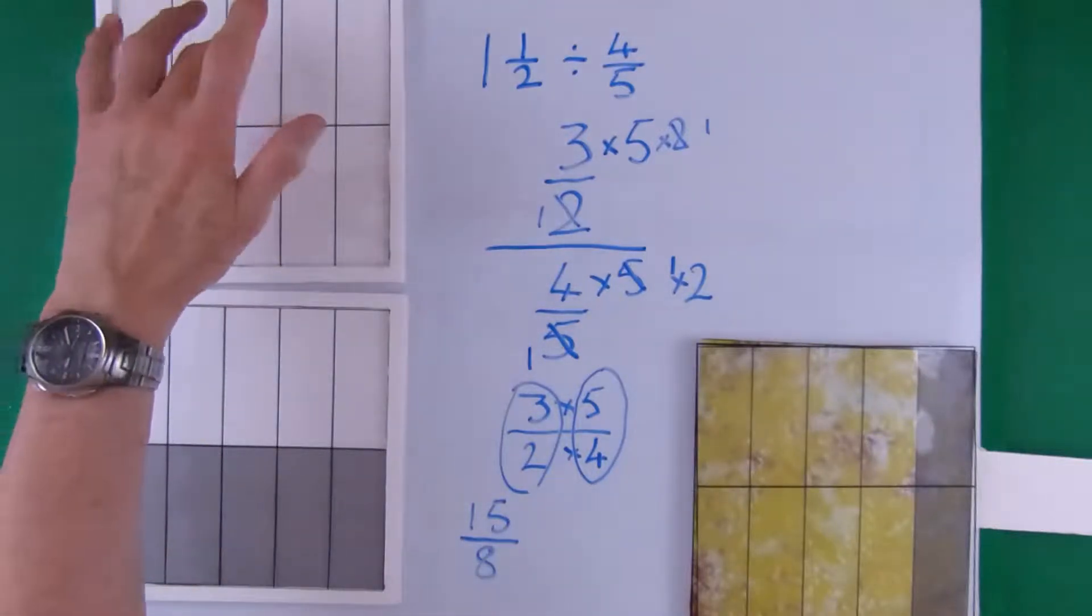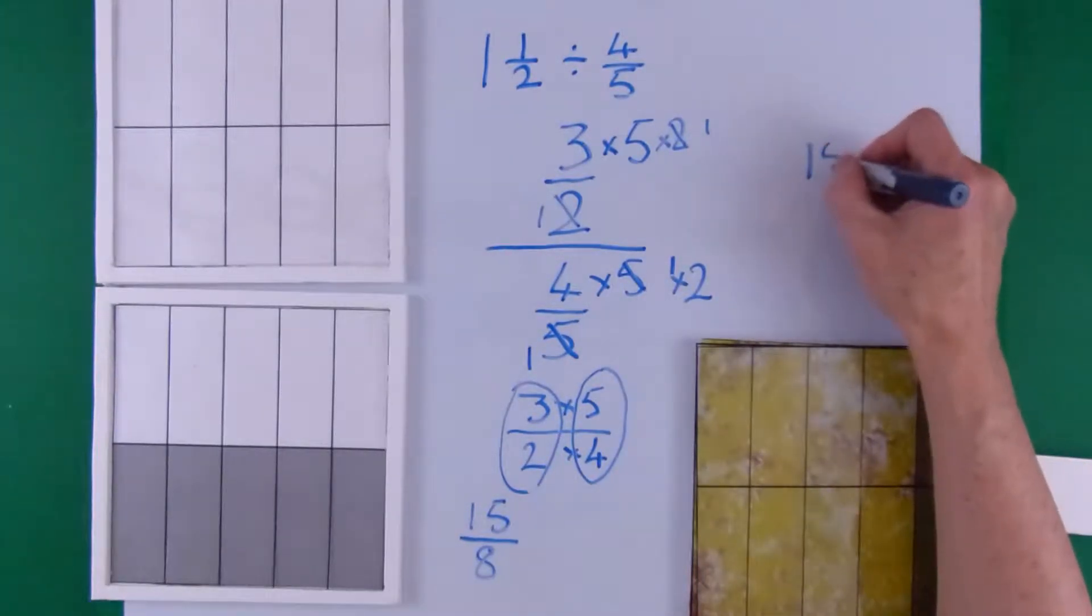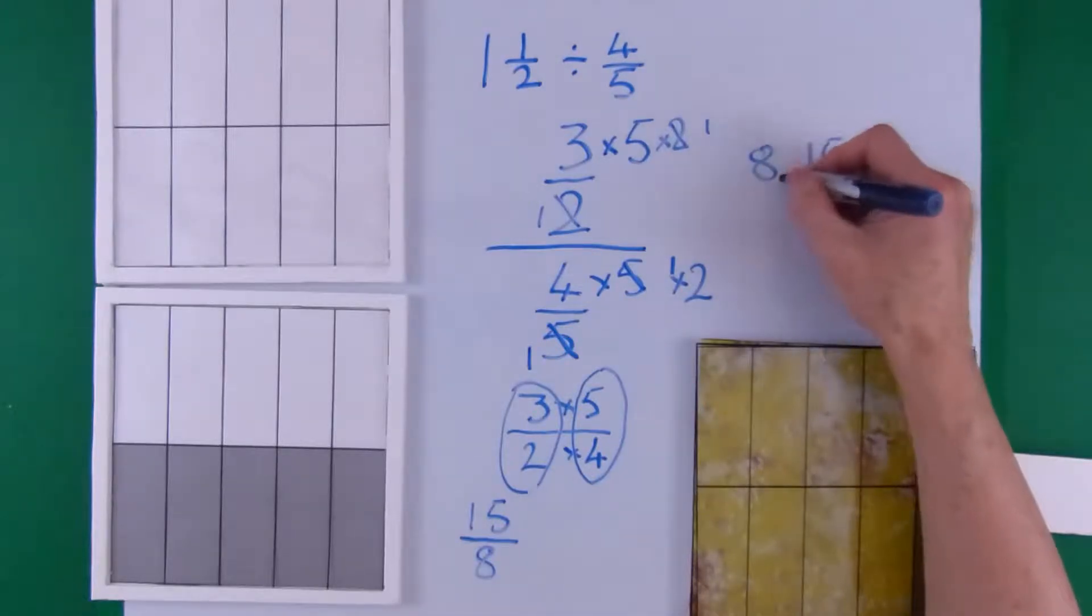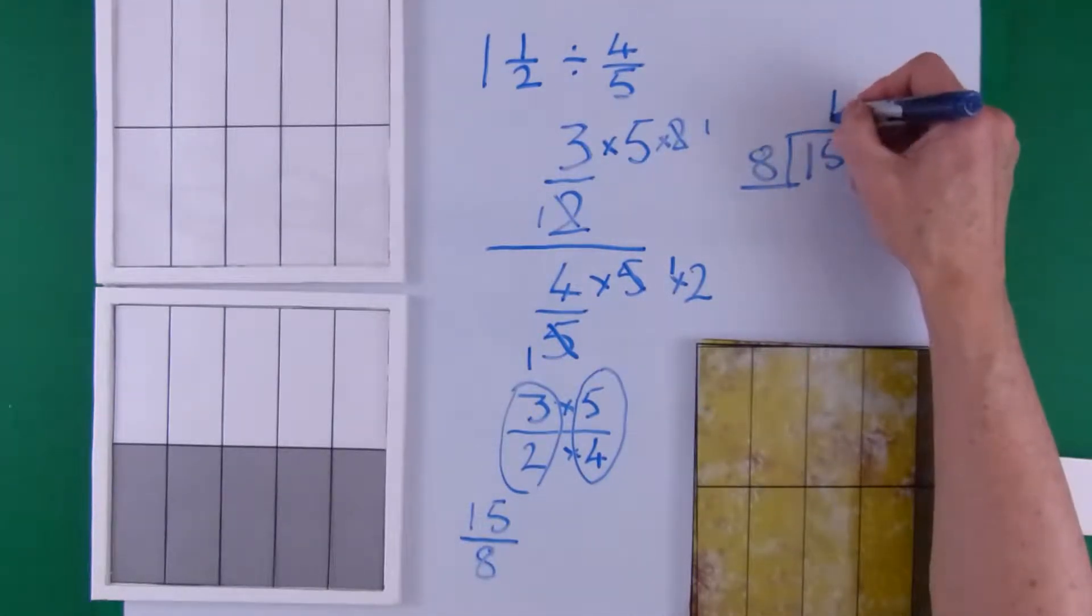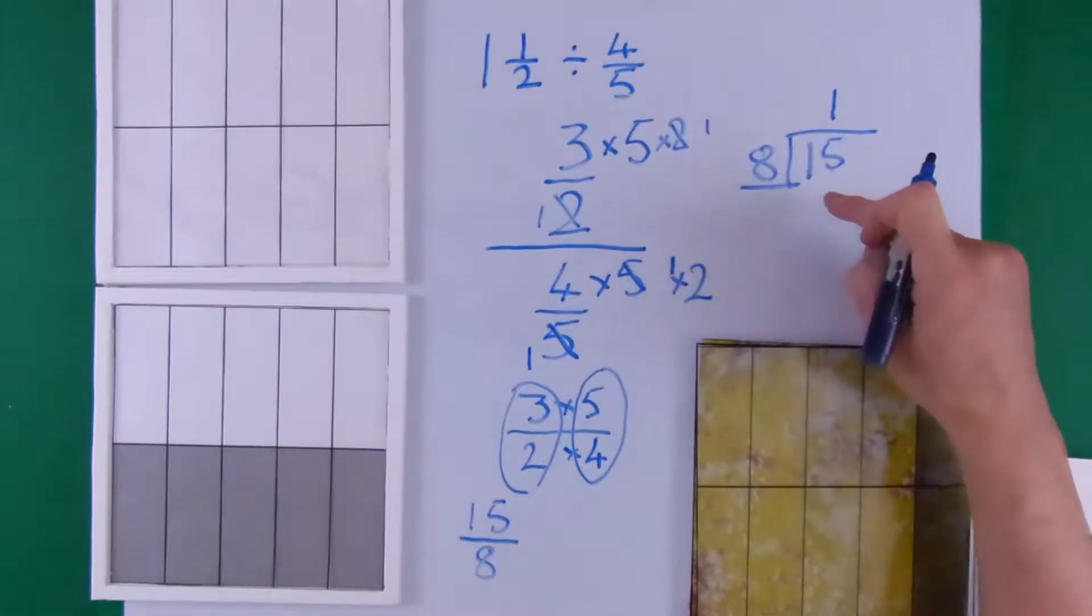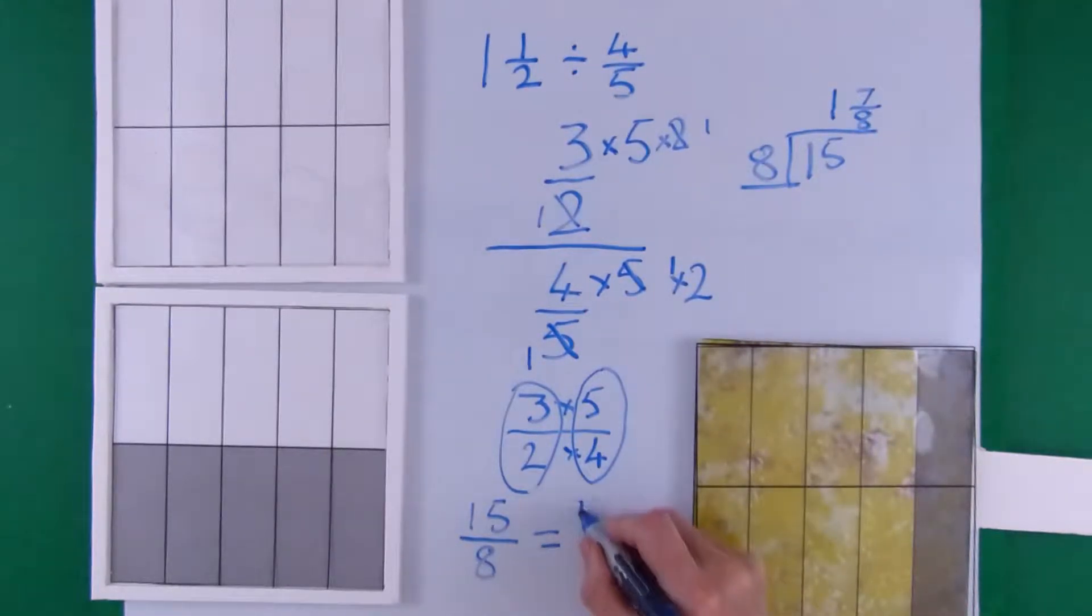We now have 15 spaces in our pizza boxes to be filled by our 4 fifths pizzas, which each have 8 pieces. Now do the divide. We've got 15 divided by 8 and we get 1 whole pizza and 7 left over. So it's 7 eighths equals 1 and 7 eighths.